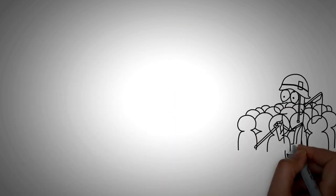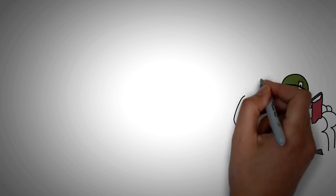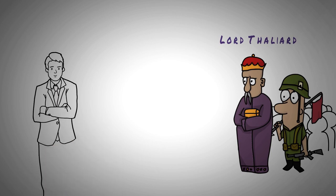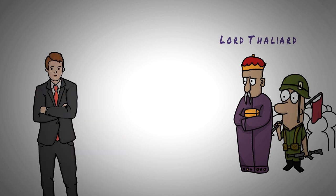Shortly after Pericles left, Lord Thaliard arrived in his kingdom from Antioch on a mission to kill Pericles from Antiochus himself. When Helicanus heard of this, he sent a message to Tarsus to inform his king.